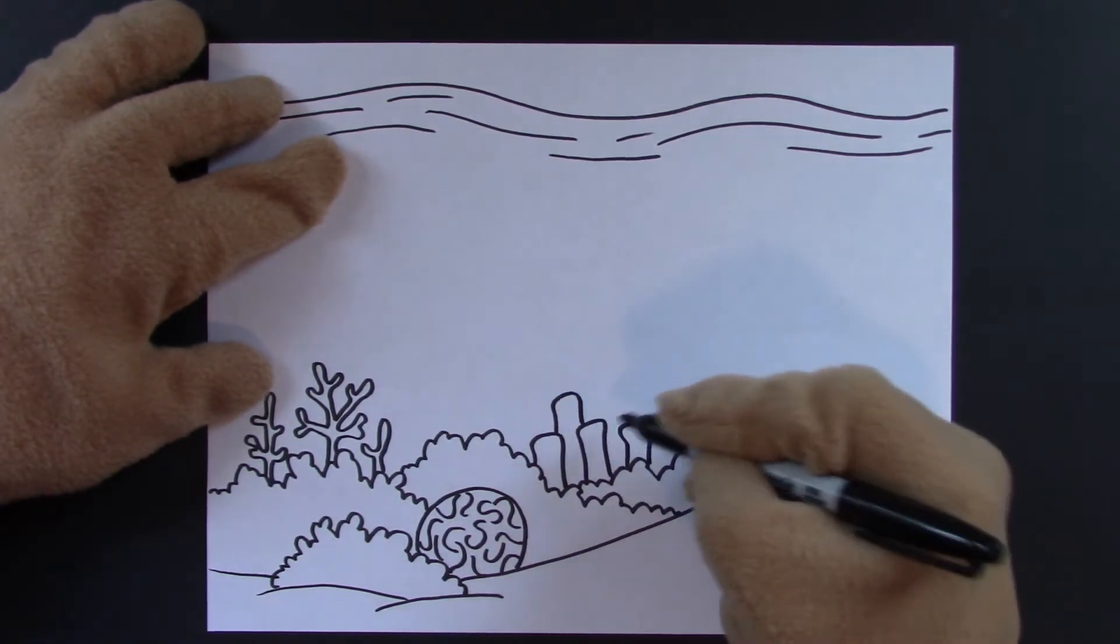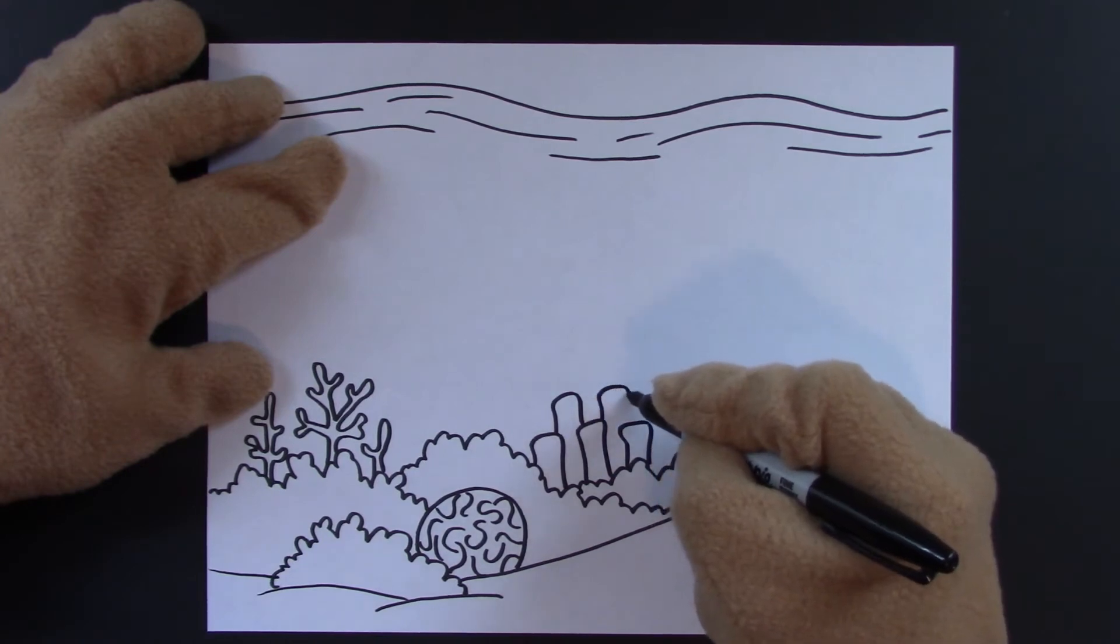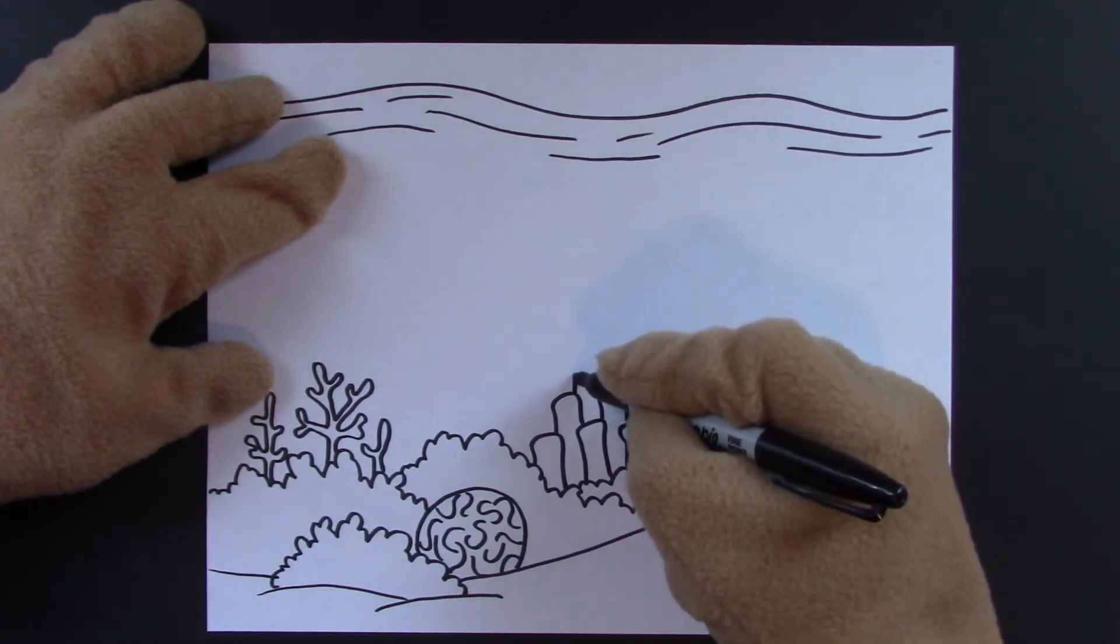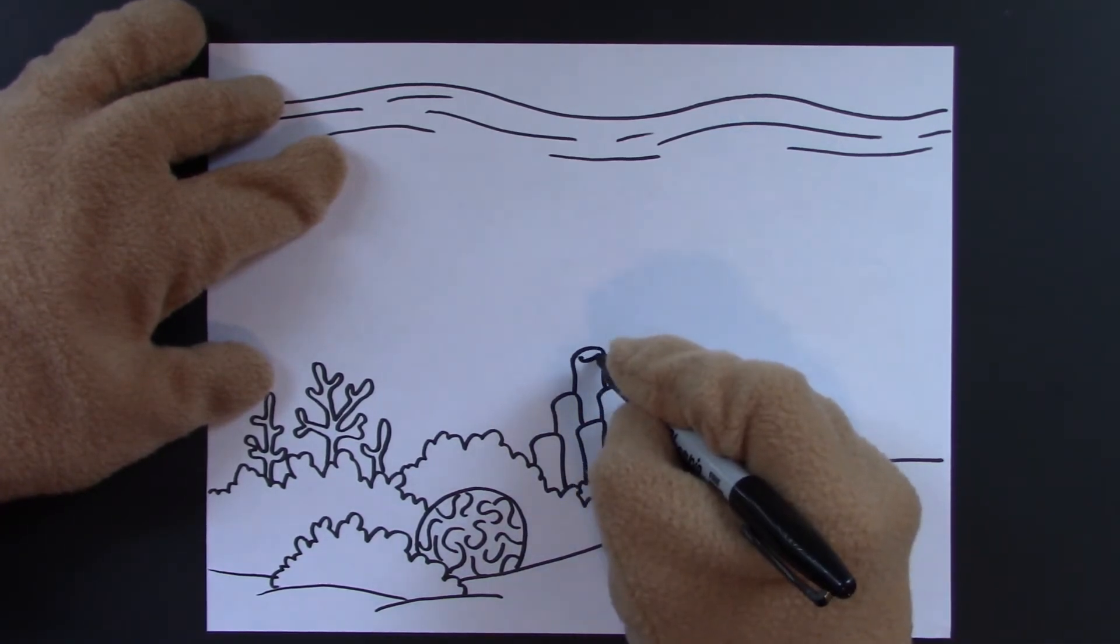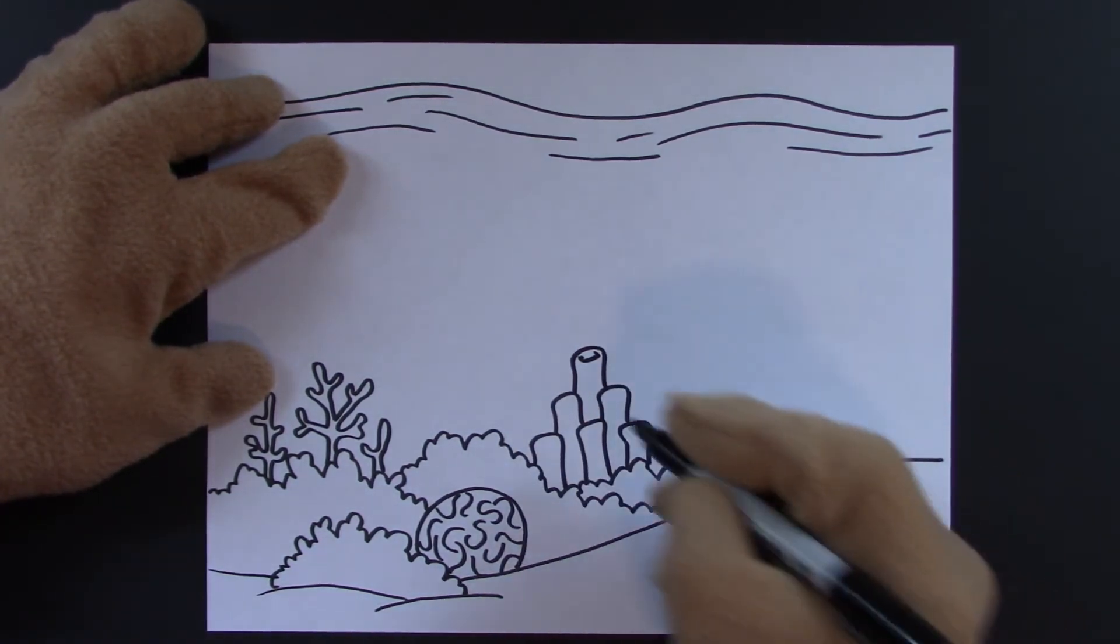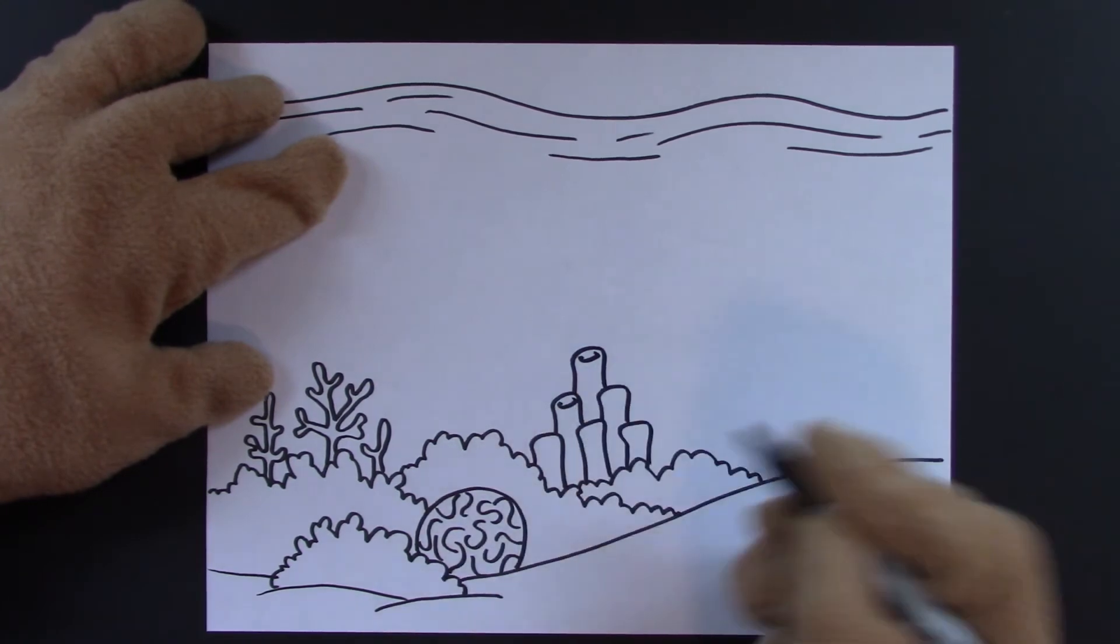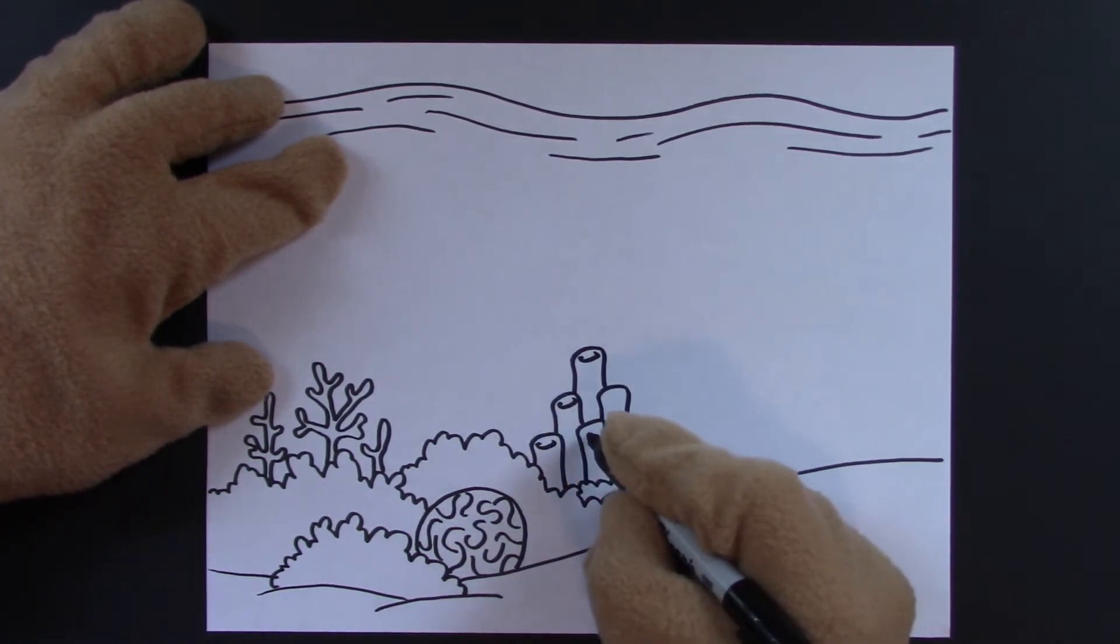Then we'll do two behind these. Just like so. And one beside it. And then we'll do one more at the very top. Now you remember the little flat C shape laying on the top of each one. It makes them look like tubes.